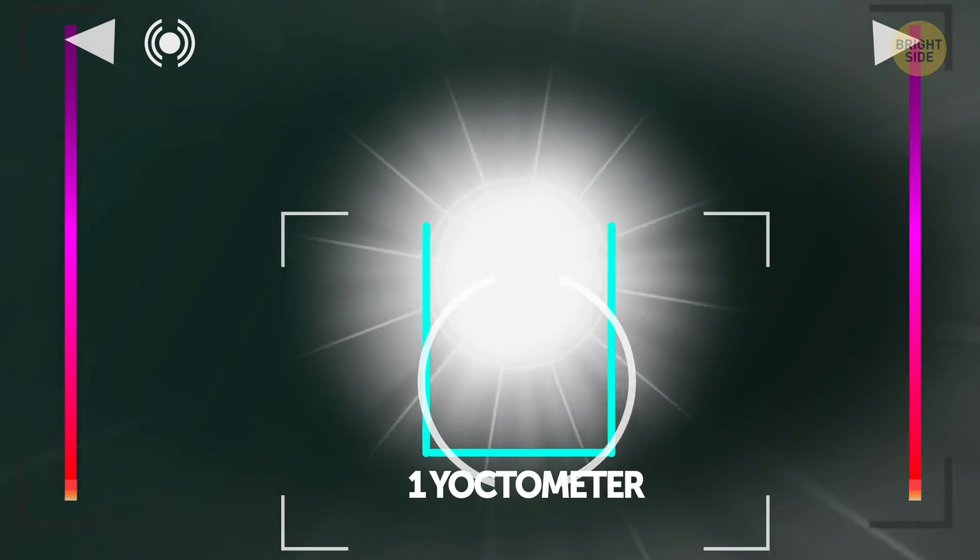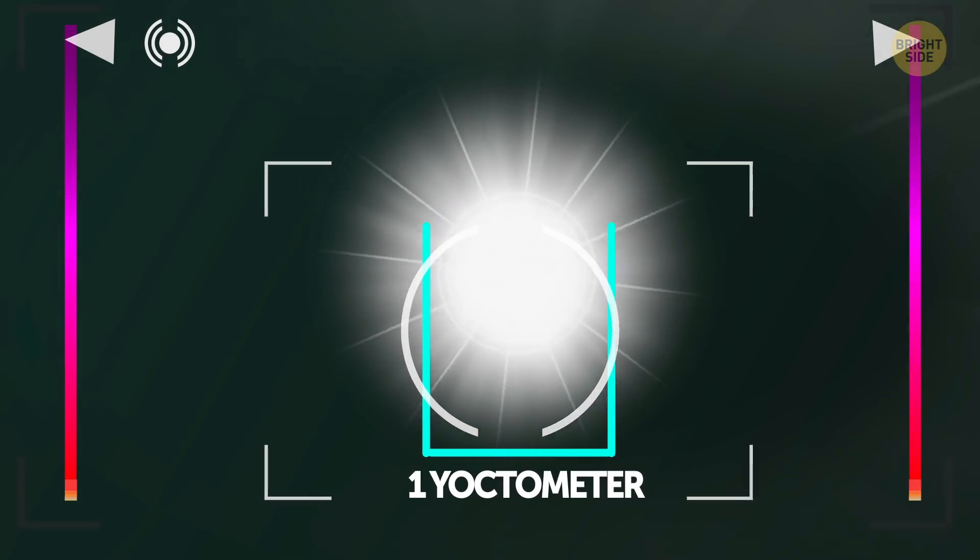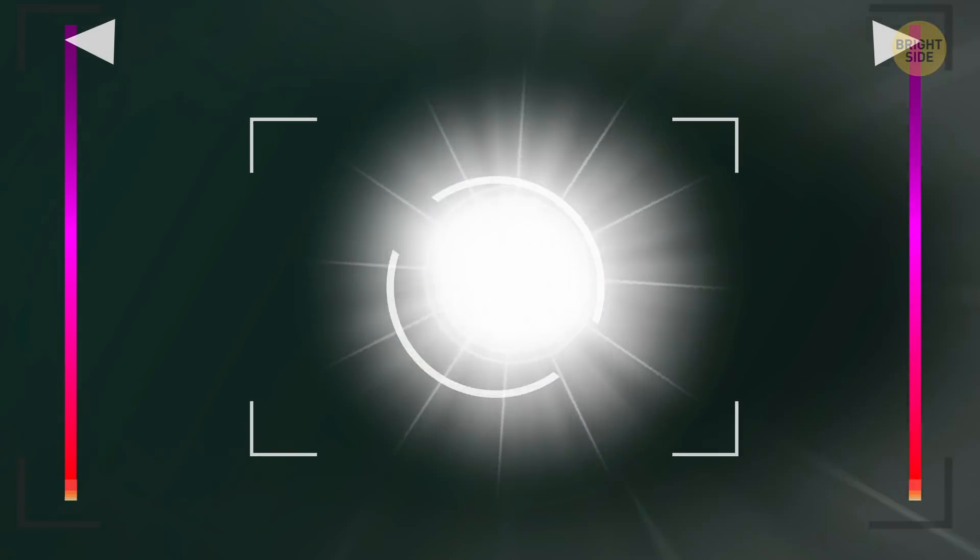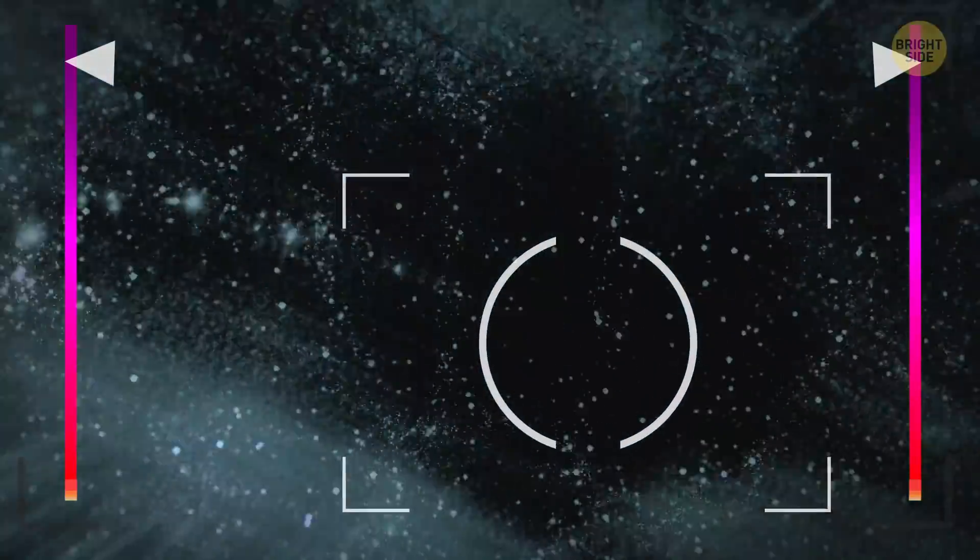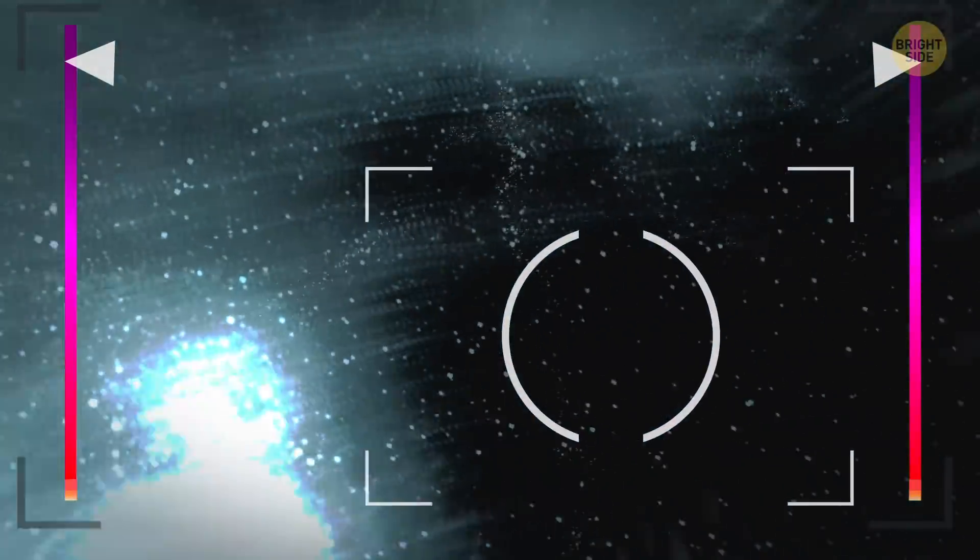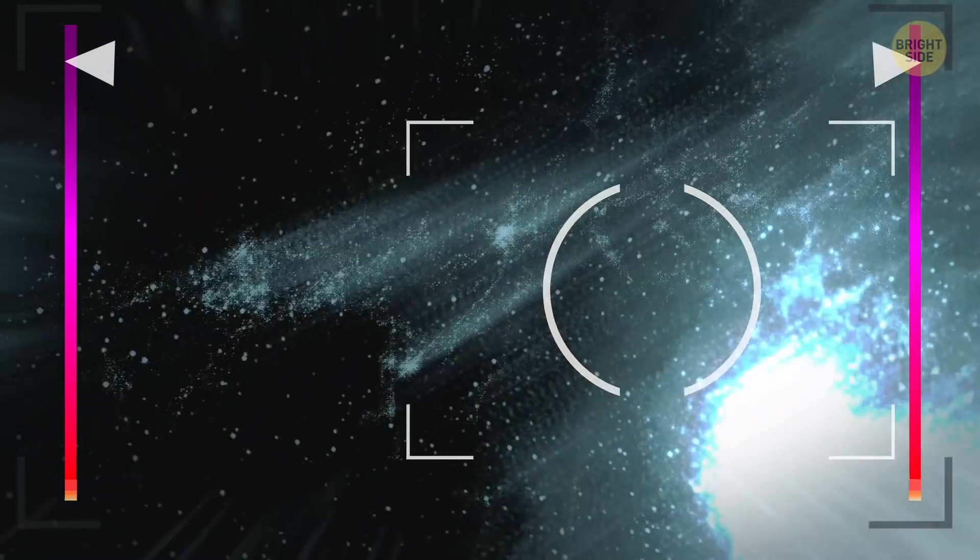Neutrinos have no charge of their own, and they're almost not affected by any of the fundamental forces of the world. They fly at high speeds and pass through all kinds of matter, as if it doesn't exist. Even you and me, right at this moment. No, you can't see them.